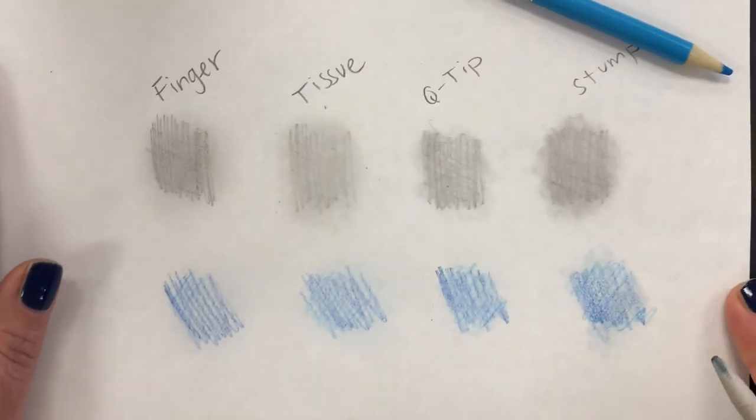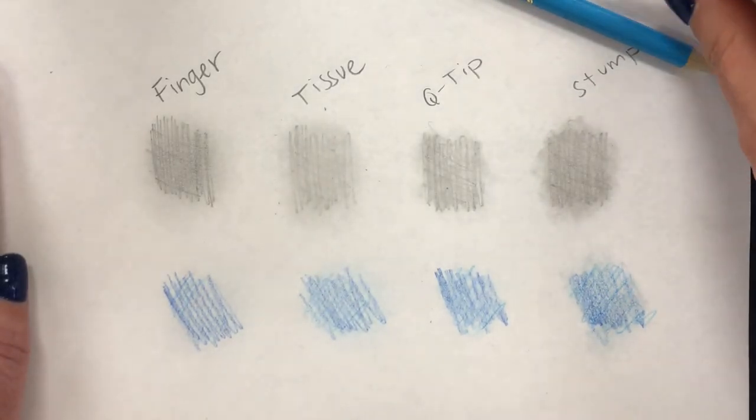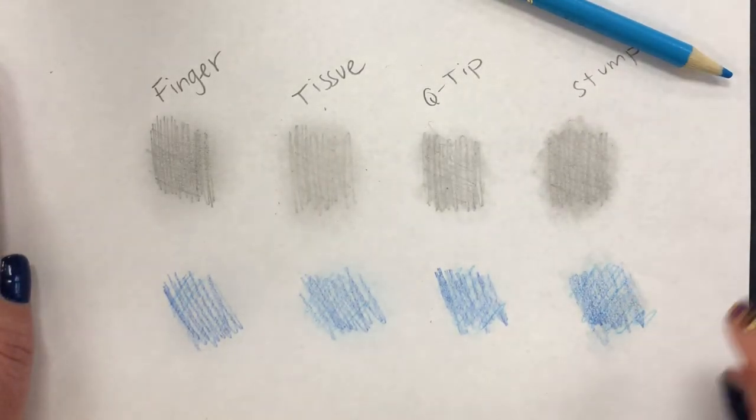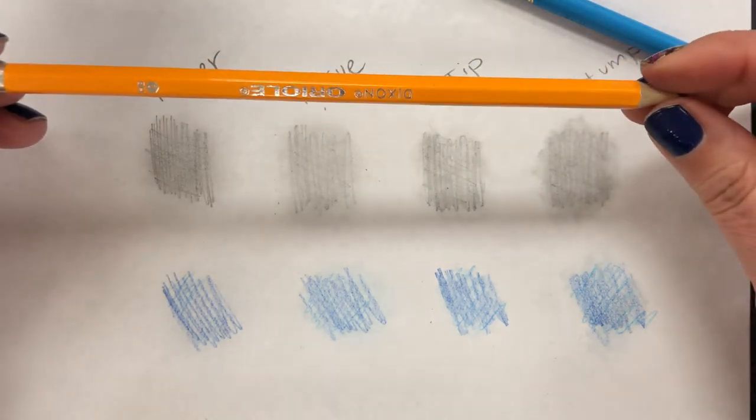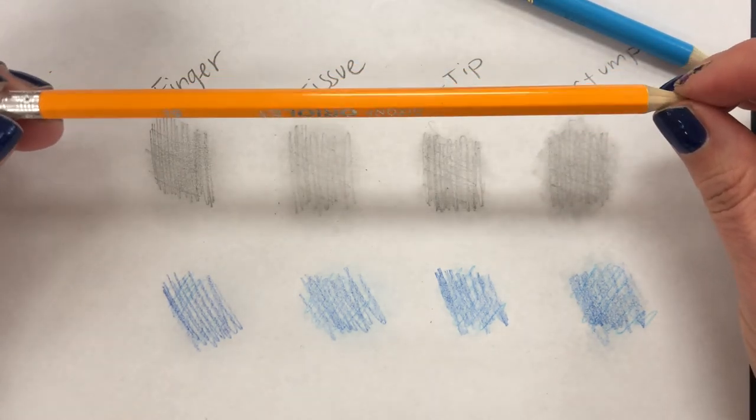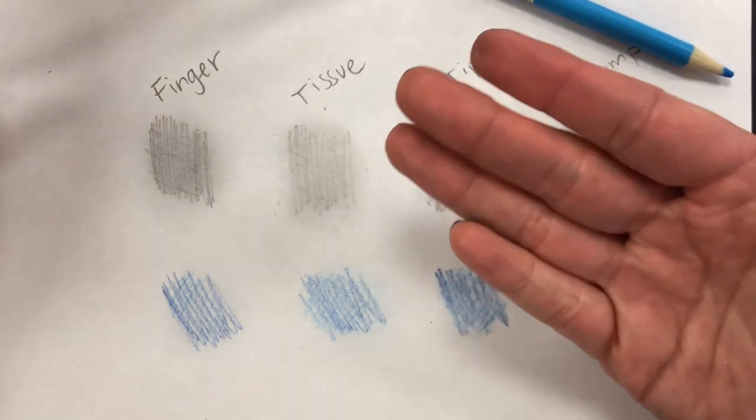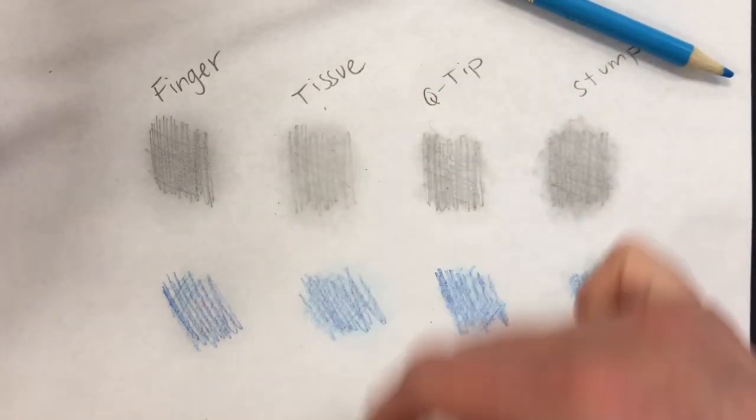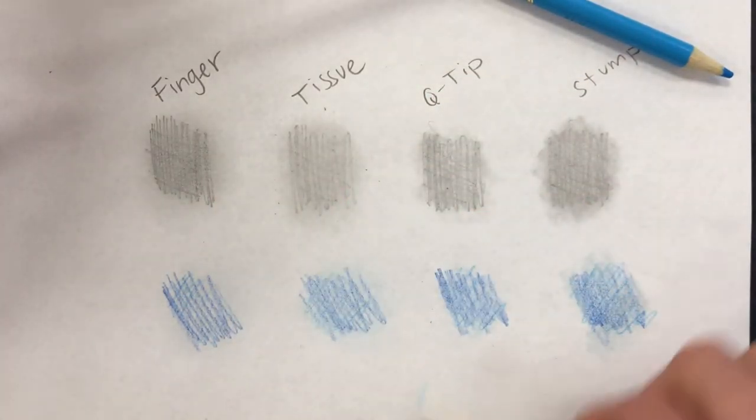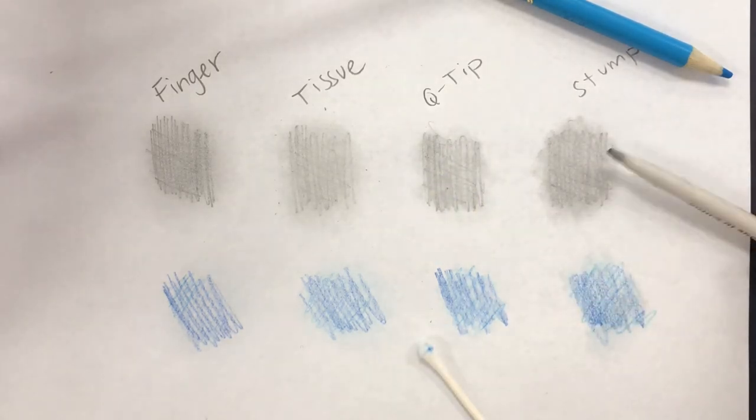All right, and there we have it. Those are four different ways to blend and you can achieve a blending effect with just a basic number two pencil and your finger, tissue paper, Q-tip, or a blending stump.